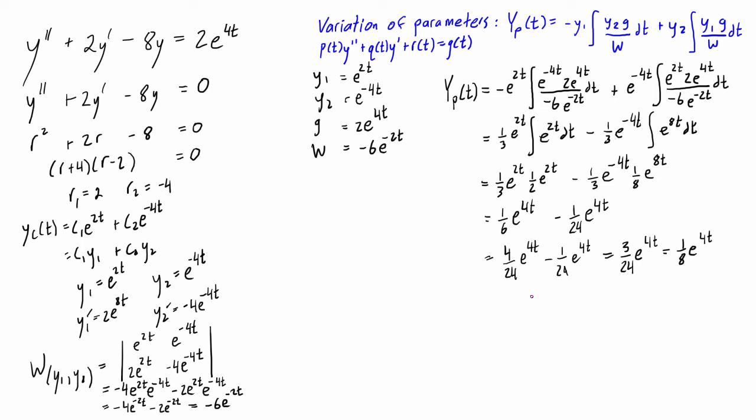So our particular solution, yp of t, e to the 4t is just that. It's one over eight e to the 4t. So let's put a little box around that because that is basically the answer. That is the goal. We have found the particular solution that we were looking for here using the variation of parameters.